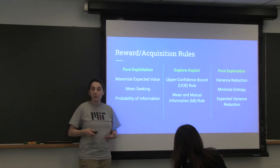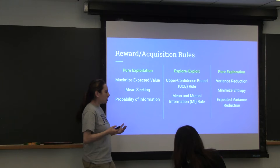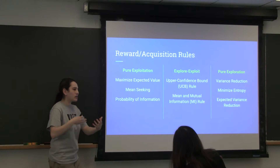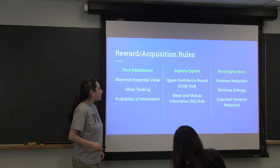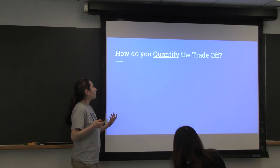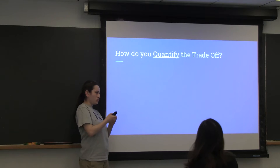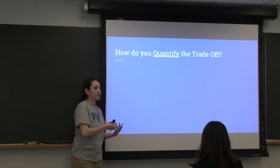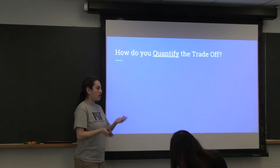For example, with the propeller example that Katie gave at the beginning, you need to explore the area around and have a good idea of what's happening in order to then exploit and take the best pictures of the propeller. So the question is: how do we quantify the trade-off? If you have a way to assign a reward for exploiting things and a way to assign a reward for exploring, how do you quantify something that's doing both?